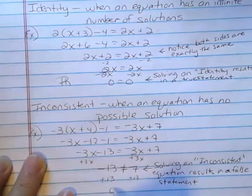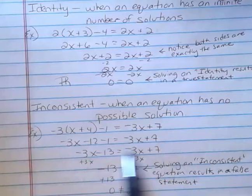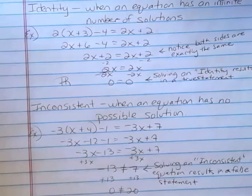At any point when you get a false statement, you can stop. You can't make this work. There's no way that these two sides of the equations are ever going to be the same. That makes them inconsistent. So, I have two equations for you to try.